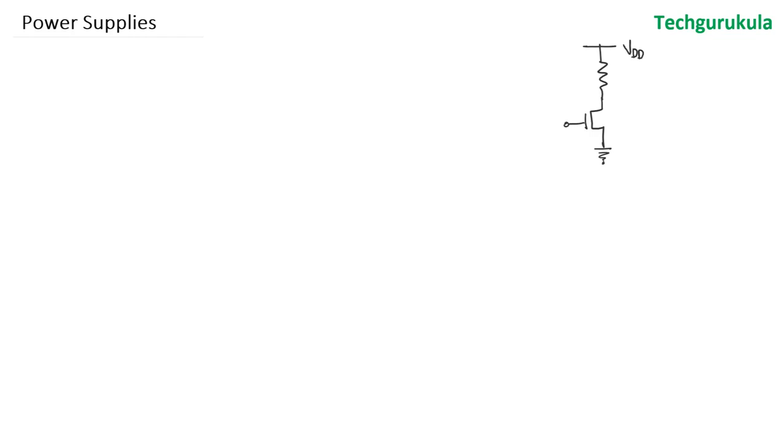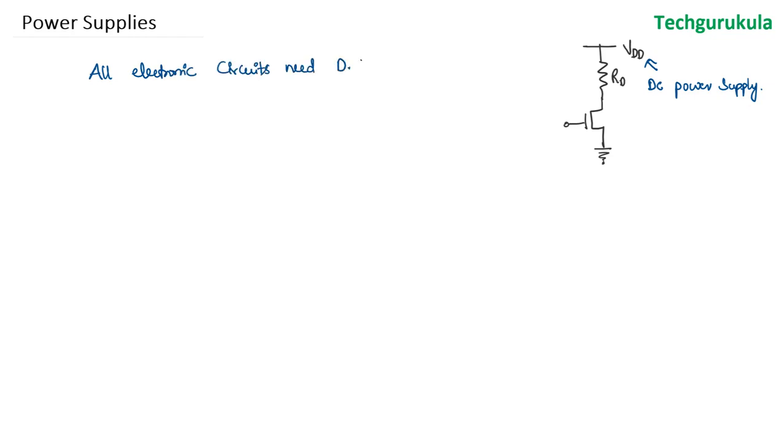This is an introductory video on power supplies. What are power supplies, and especially what power supplies are we talking about in analog circuits? To start with, let me take a simple analog circuit — let's say a common source amplifier. Our intention here is not to understand the amplifier, but to think about the DC power supply that we give it. Any circuit we talk about needs a DC power supply; all electronic circuits need DC supply.